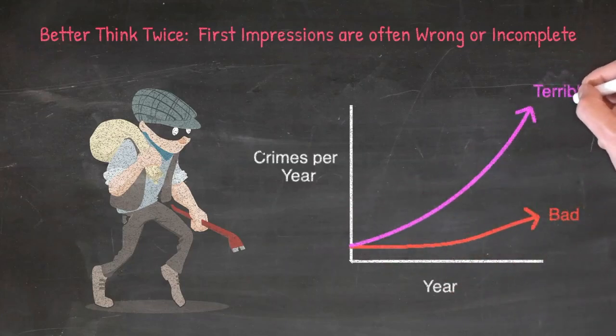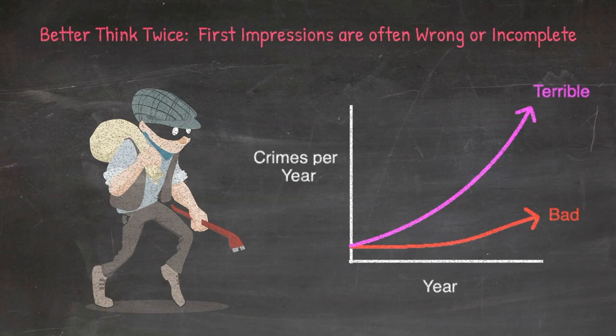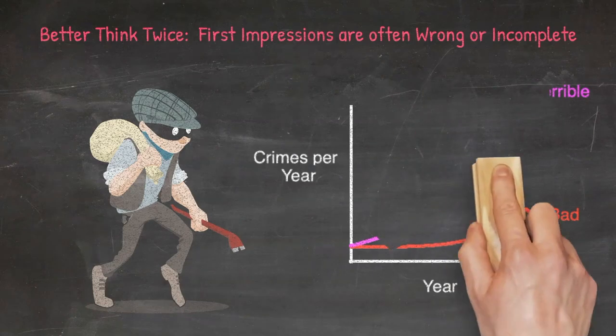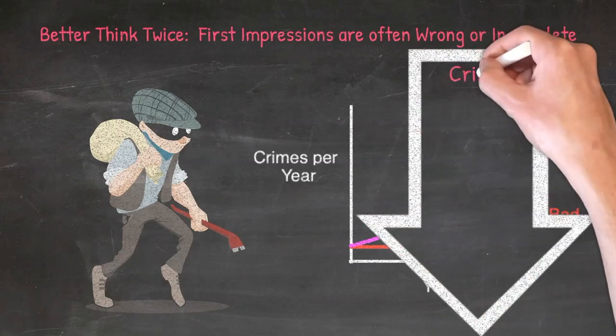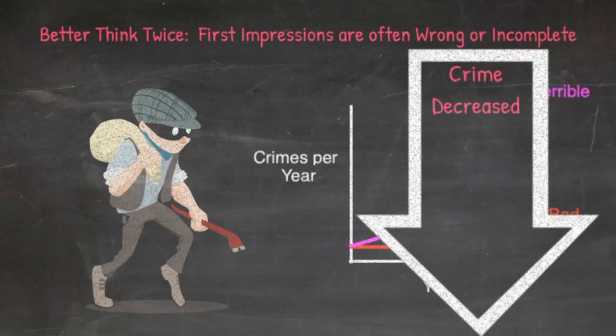And afterwards, everyone that predicted it would get worse already had an answer ready as to why it decreased, attributing the reduction in crime to some effort to curb crime, such as increased policing and that.